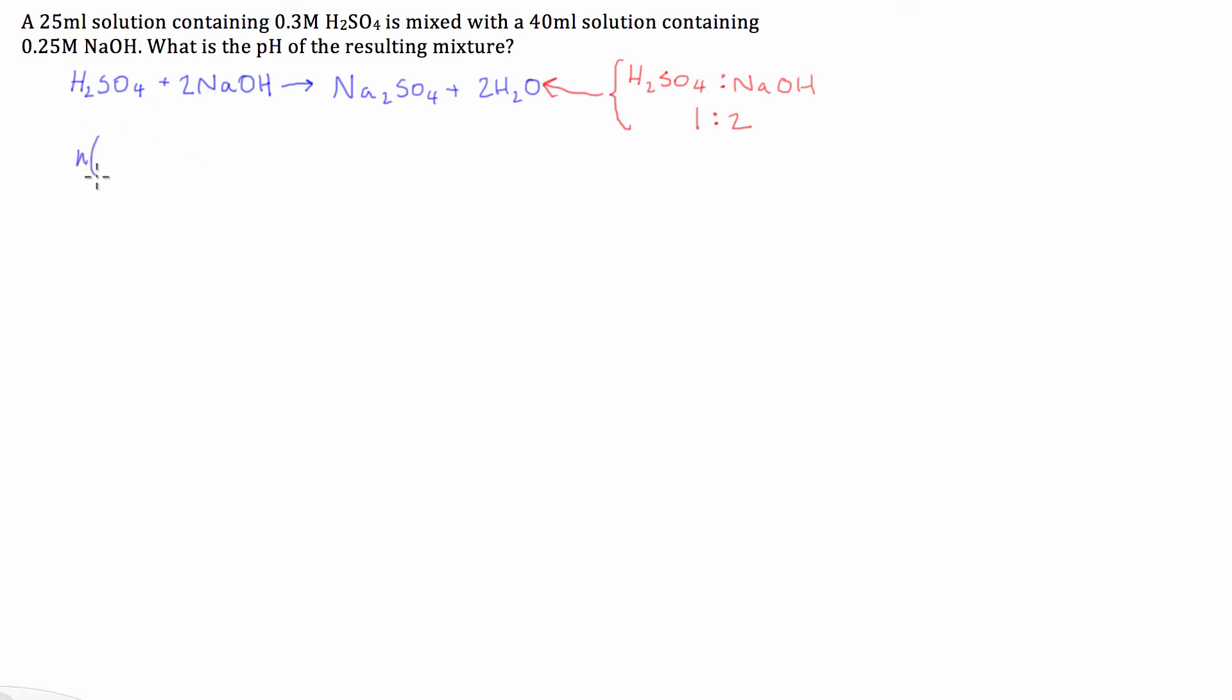And so we're going to go, the number of moles of H2SO4 is equal to concentration times volume which is equal to, the concentration of this is 0.3 times the volume, which is 25 mils. So in litres, that's going to be 0.025 and that's going to equal 0.0075 or 7.5 times 10 to the negative 3 moles.